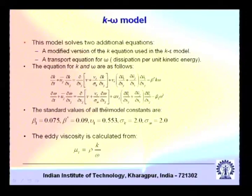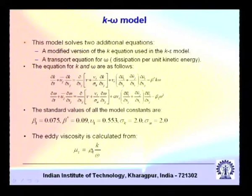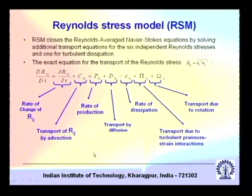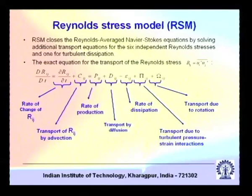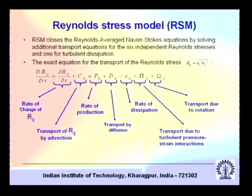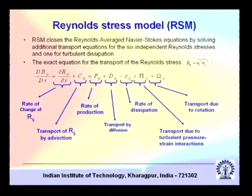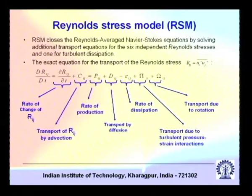The k and omega equations can be cast in a general conservative form with standard model constants, and the eddy viscosity is calculated from k and omega via dimensional analysis. For more detailed modeling, the Reynolds Stress Model (RSM) closes the RANS equations by solving additional transport equations for all six independent Reynolds stress components and one for turbulent dissipation — seven additional equations total. Each Reynolds stress component equation includes production, diffusive transport, dissipation, pressure-strain interaction, and rotation effects.